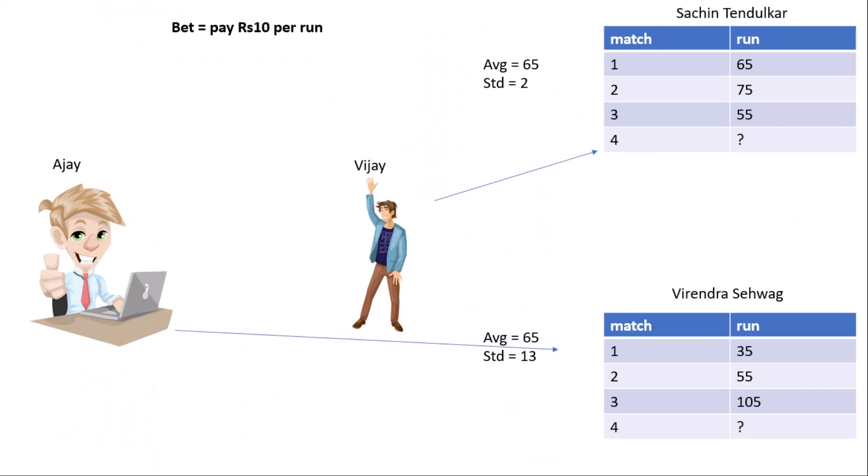So Vijay selects Sachin Tendulkar because Vijay knows statistics and he takes a smart decision. He knows what is the meaning of variation. They are betting on the fourth match.